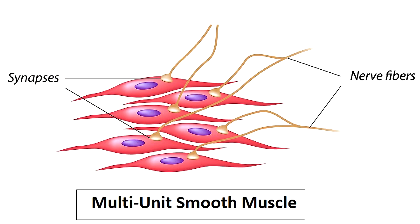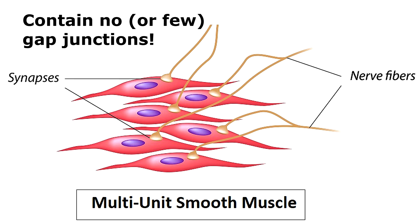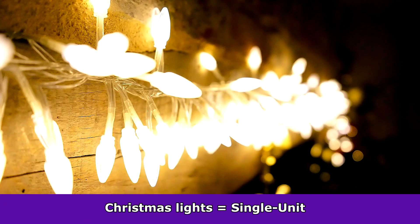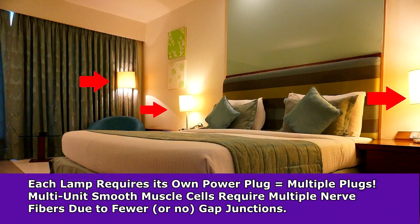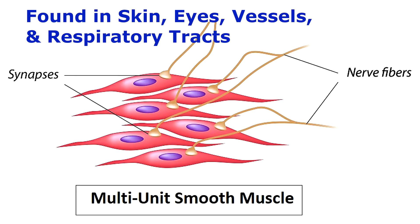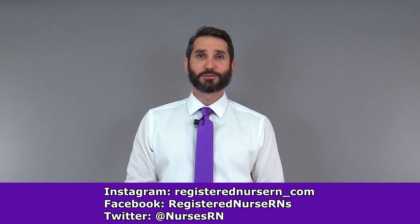Multi-unit smooth muscle cells contain fewer gap junctions, so the electrical impulse cannot spread across all cells as efficiently. Each cell requires its own electrical impulse, hence there are multiple nerve fibers here to deliver that impulse. Using the Christmas lights analogy, multi-unit smooth muscle is like five individual lamps that each need to be plugged in separately to get their own power. This type of smooth muscle is found more in the skin, the eyes, and the blood vessels.